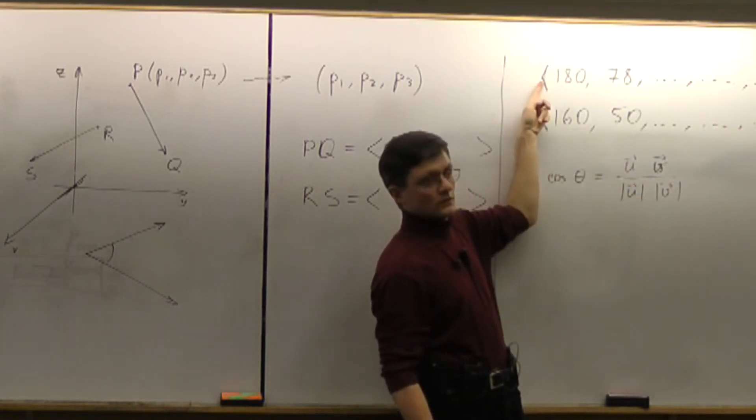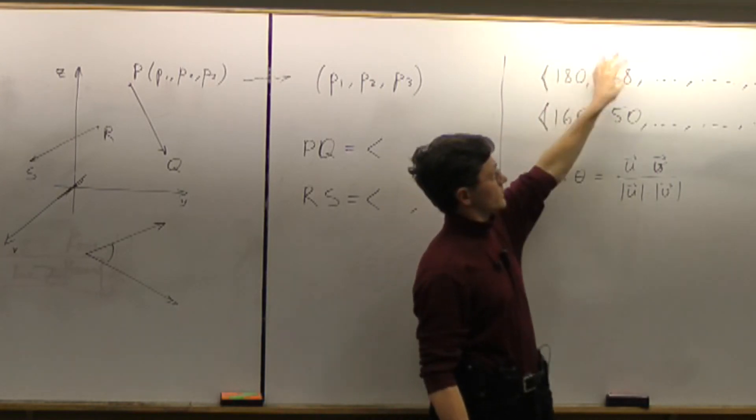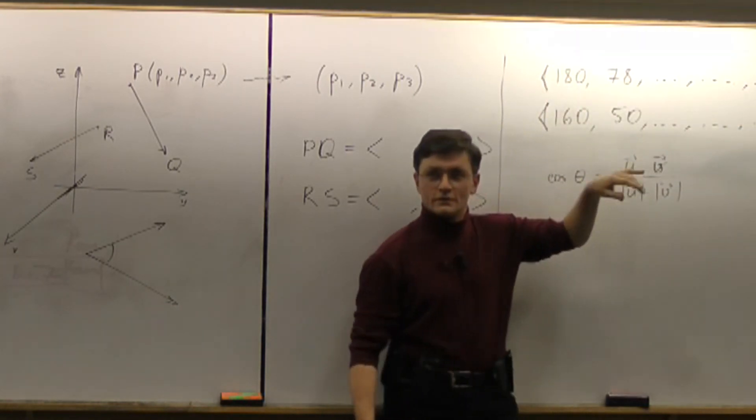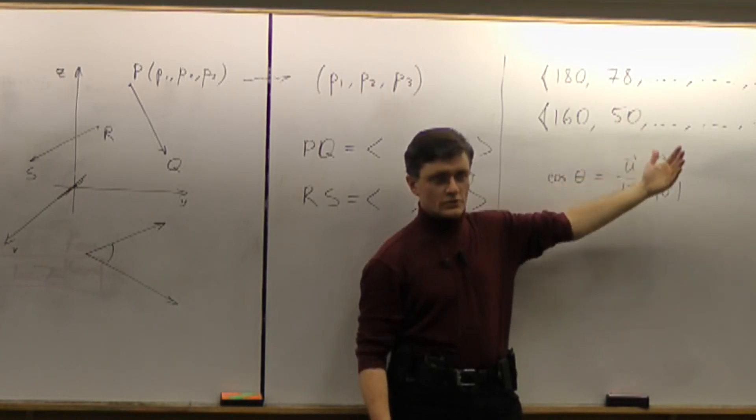How do you make magnitude of this? Square root of this squared, plus this squared, plus that squared, plus that squared. So all these things generalize to any dimension you want.